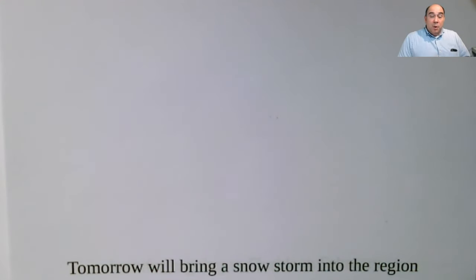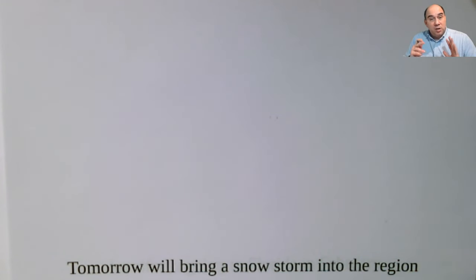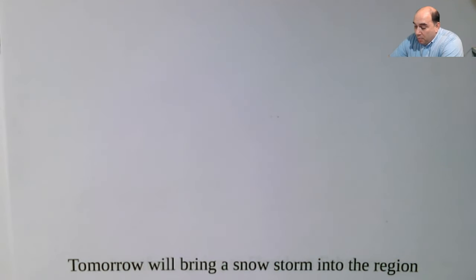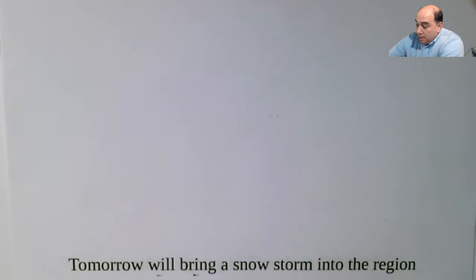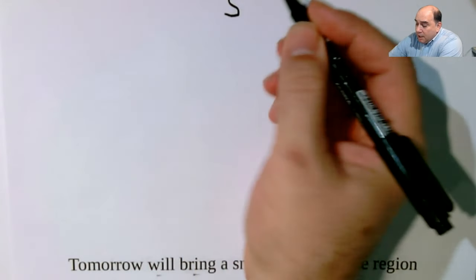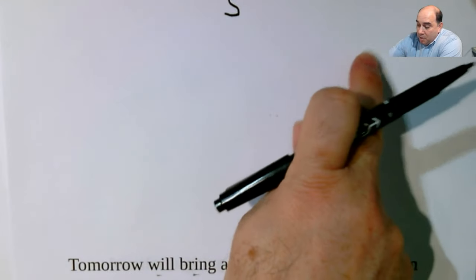Now the next one we're going to be working on here — again, we want to do the same type of thing. We want to find the main verb and then try to break it down properly. Here's your main verb: 'will bring.' Actually, the main verb is 'bring,' but we'll start there. You're going to come up here and put your little S in for a sentence. Here's your main verb, so you know when you go to put in your verb phrase, it's going to come all the way over.